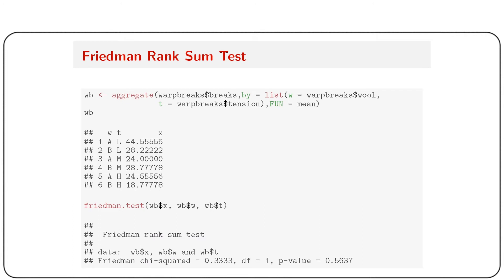The second way uses the warpbreaks dataset. wb is created using aggregate: breaks by wool and tension with function equals to mean. The Friedman test is then applied by passing three columns — wb$x, wb$w, and wb$t — where the first argument is the numeric value and the next two are the stratifying variables. This generates the Friedman test statistic, degrees of freedom, and p-value of 0.056, which is not significant.